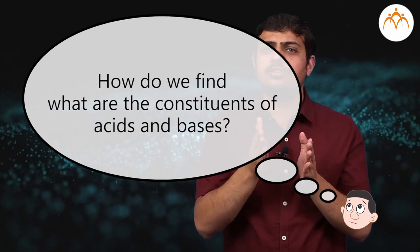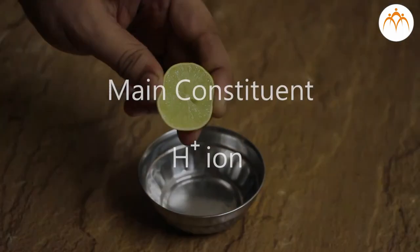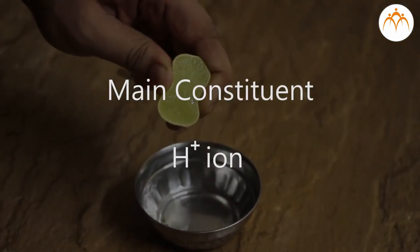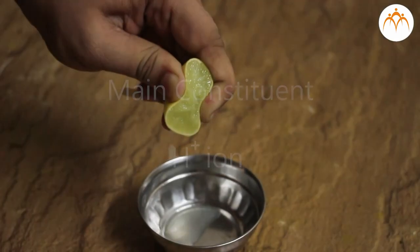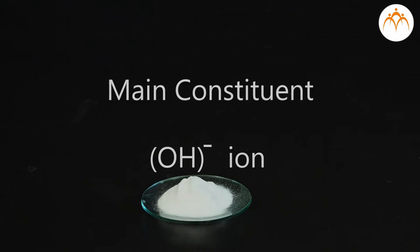Now let us discuss properties of acids and bases. How do we find what are the constituents of acids and bases? The main constituent of acid is the H+ ion. Acid molecules contain hydrogen ion H+ as a main constituent. They give H+ ions in solution state. For example, HCl dissociates in water: HCl (aqueous) gives H+ and Cl−, that is, hydrogen ion plus chloride ion.